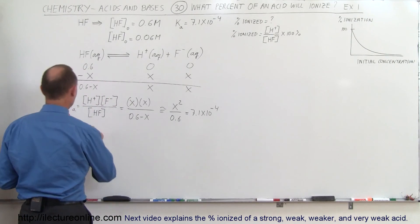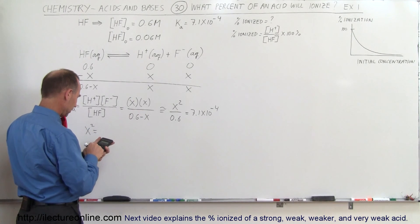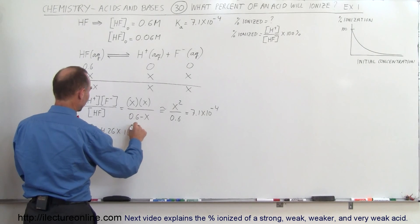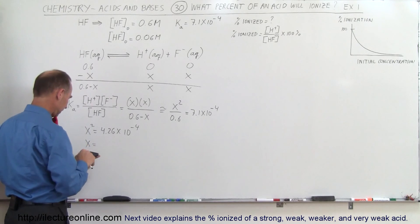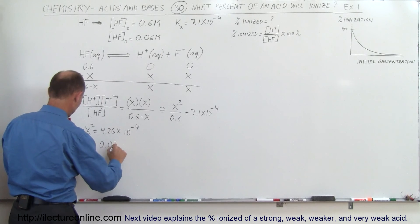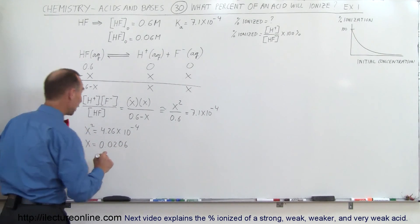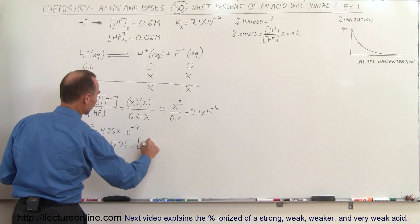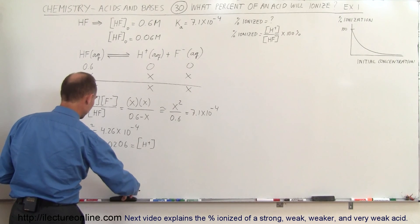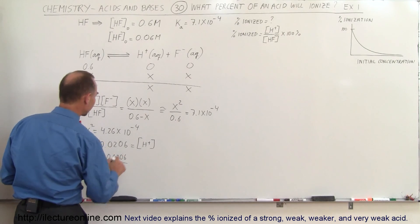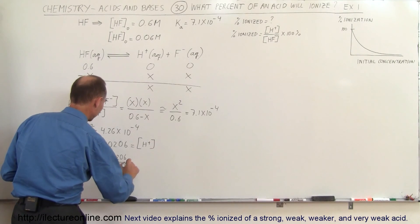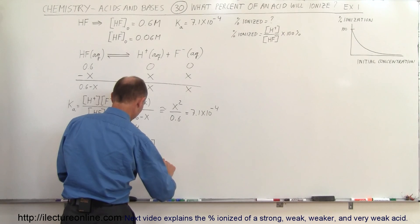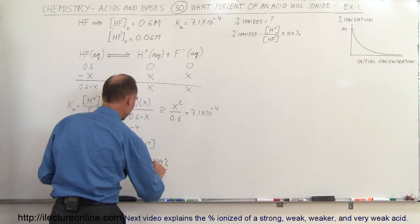That means x squared will be equal to 7.1 times 10 to the minus 4 times 0.6, which equals 4.26 times 10 to the minus 4. Therefore the square root of that will be 0.0206. So percent ionized equals the concentration of the hydrogen ion, which is x, divided by 0.6 times 100%, and that equals 3.44% — less than 5%, so that's acceptable and we can use that result.